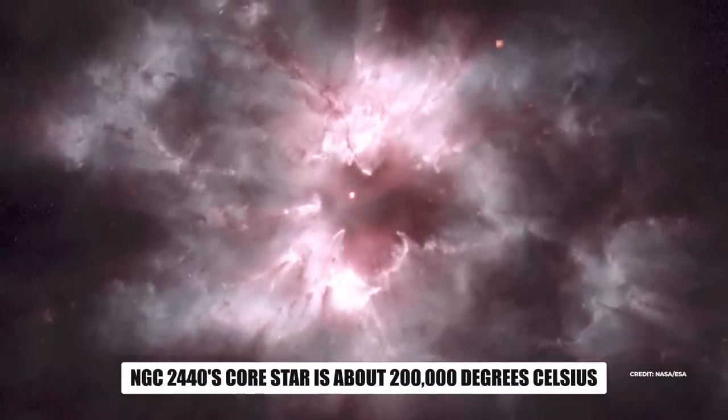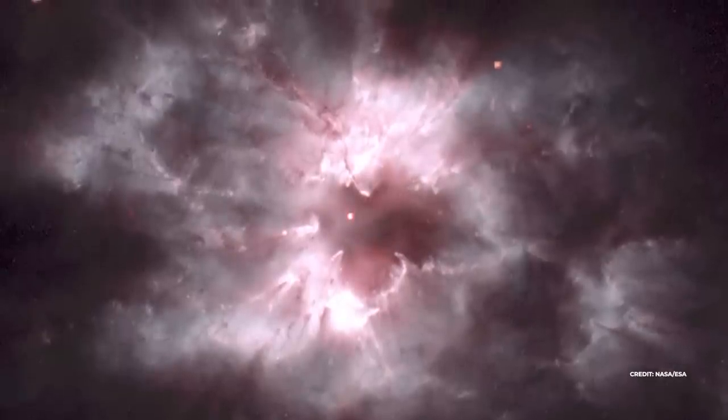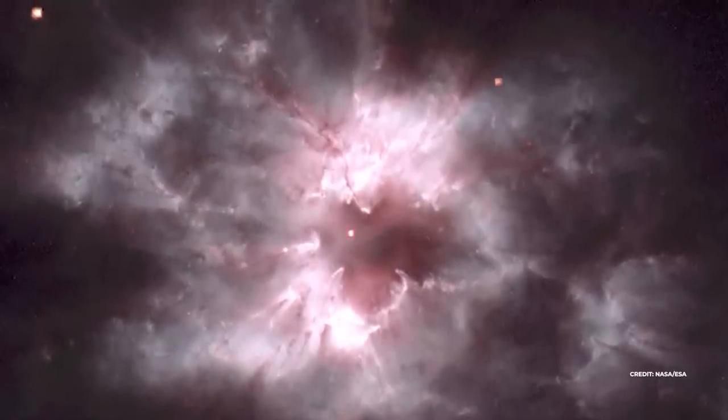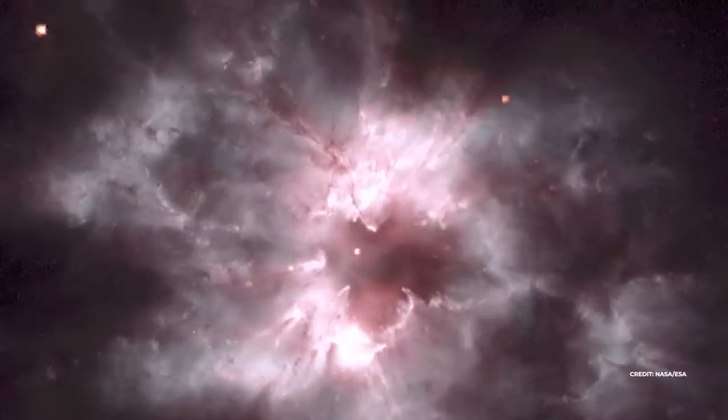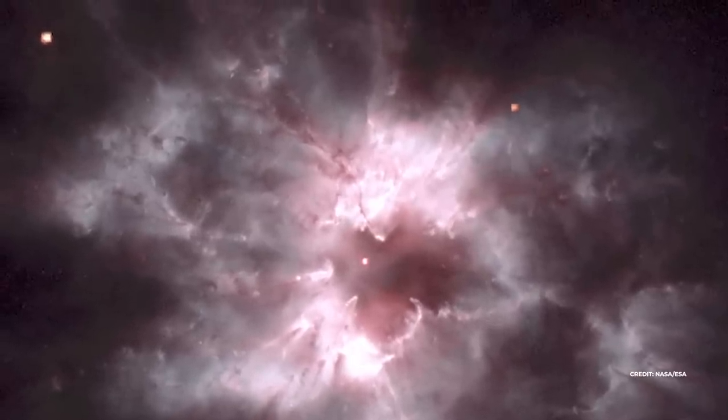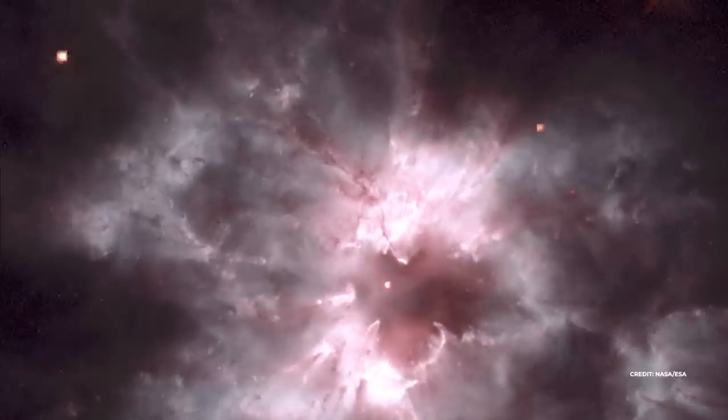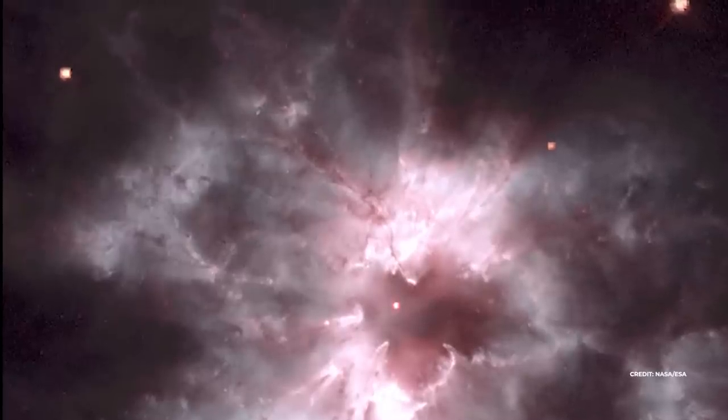Some astronomers believe that the intricate structure of the surrounding nebula indicates that the central star has had periodic oppositely directed outflows, similar to NGC 2346. But in NGC 2440, these outflows have been episodic and in different directions. Dust clouds in the nebula generate black streaks away from the center star.